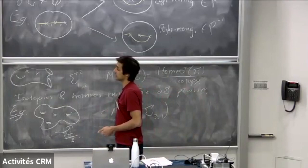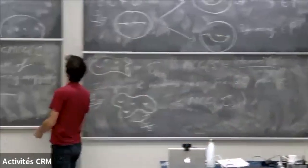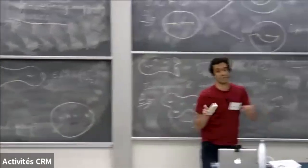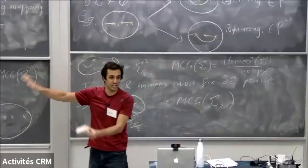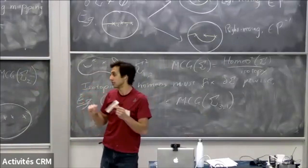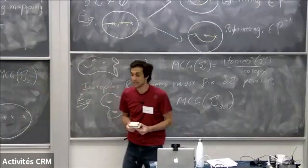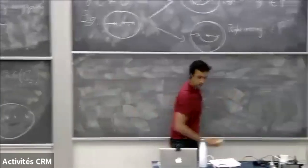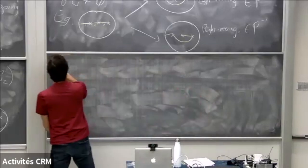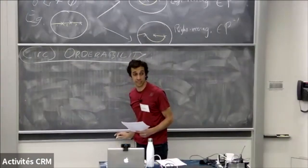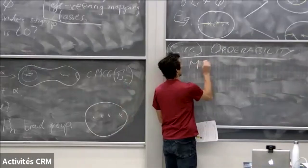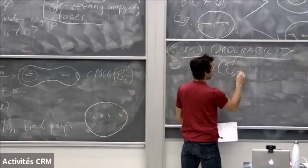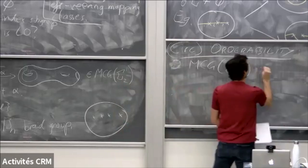Let's talk about circular orderability of mapping class groups. There is circular orderability. I'm going to give you two ways to circularly order some mapping class groups. What's true is that the mapping class group of a genus g surface with one puncture is circularly orderable. If it has boundary, it's left orderable — so it's circularly orderable. But what about the ones without boundary? The ones with one puncture are, and let me sketch out why in at least two different ways.